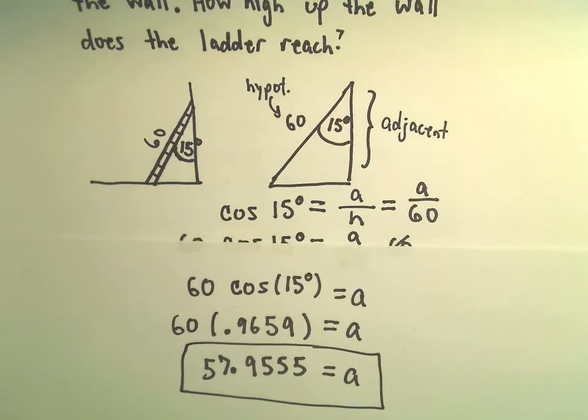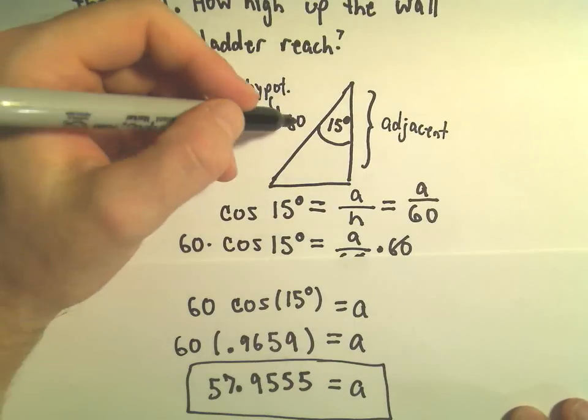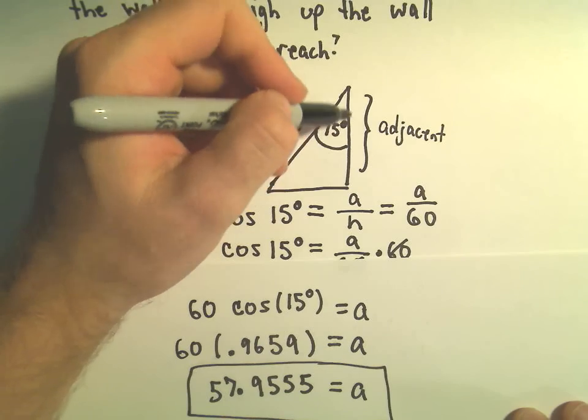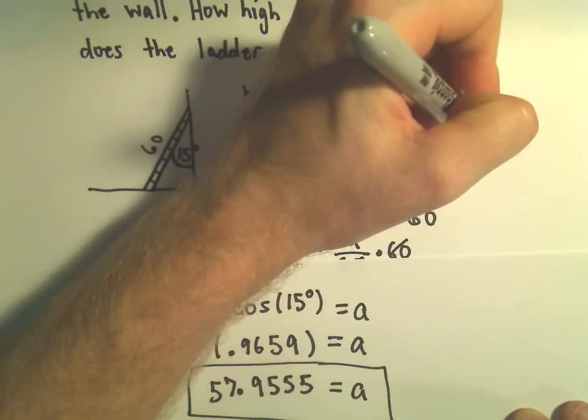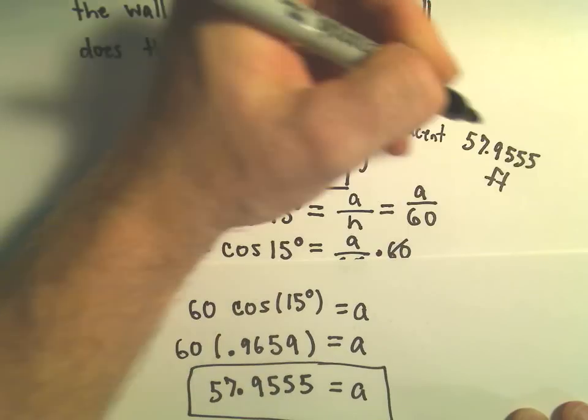So it says this ladder is going to reach to a height of approximately 57.955 feet up the wall.